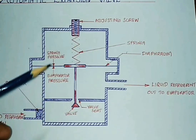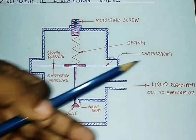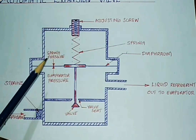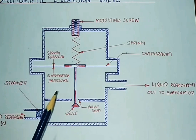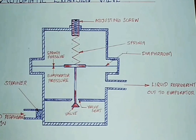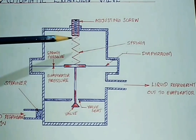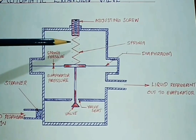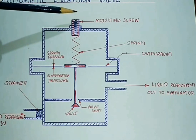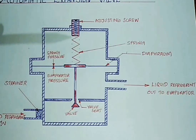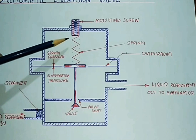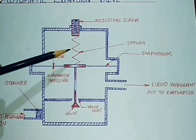While the compressor is running, the pressure of the evaporator, the valve, the spring pressure, and the atmosphere pressure all reach an equilibrium level. We need to adjust the adjusting screws to set the spring pressure.